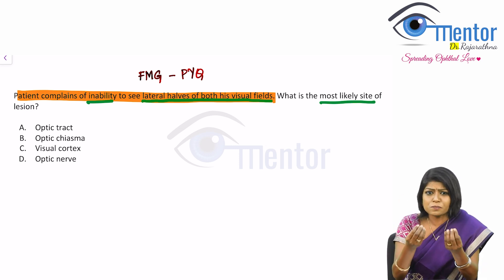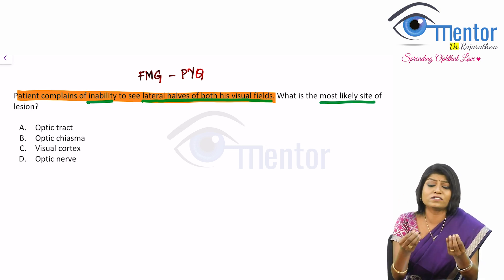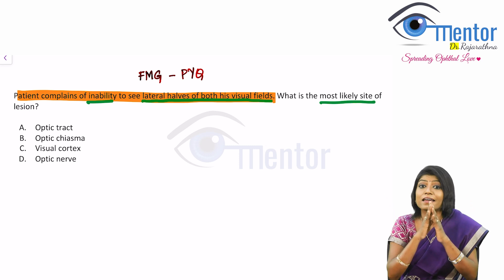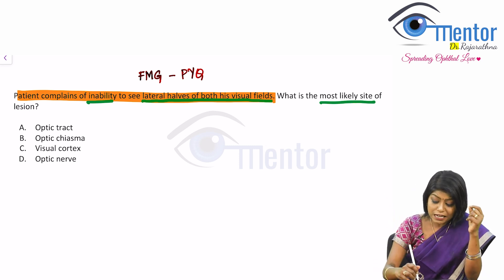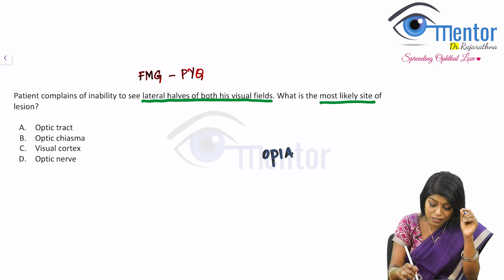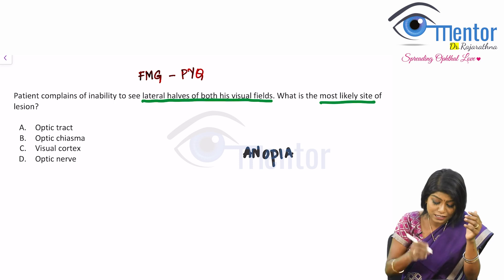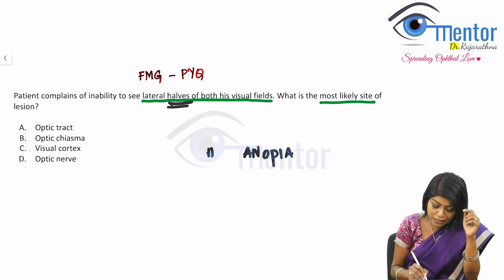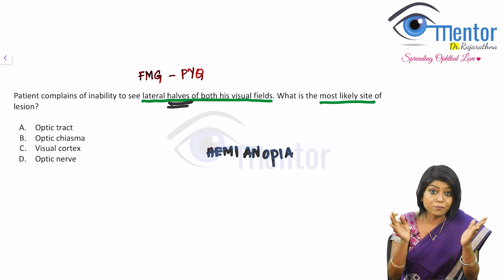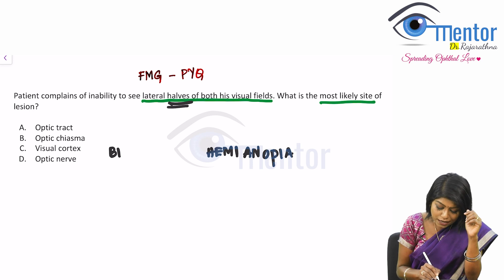So just by whatever I've explained so far, you already know the answer. I said the temporal half of both eyes I am not able to see. When I am saying vision, vision means opia, and they are talking about inability to see — inability to see meaning anopia. Now is it the full field or half the field? They've said half, so it's going to be a hemianopia. Now which half? It is the temporal half on both eyes. So it is bitemporal hemianopia.